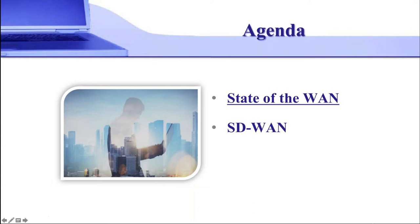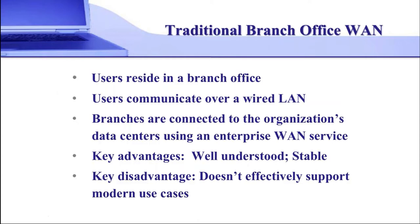I have two key topics I want to talk about today. One is the state of the WAN — the traditional WAN, which as we all know is hardware-based and very reliant on MPLS. And I'm going to talk about software-defined WANs, drawing on recent market research I conducted into the wide area network. The traditional branch office WAN, which really began to be implemented at the turn of the century, has users residing in a branch office communicating over a wired LAN, with branches connected to the organization's data centers using an enterprise WAN service, typically MPLS.